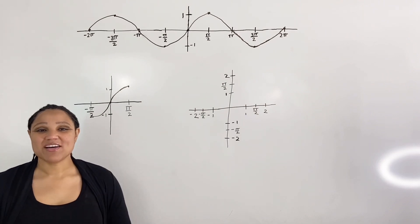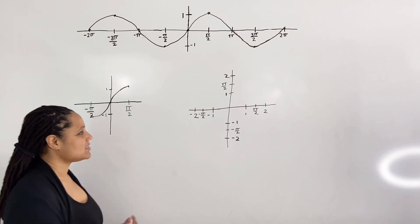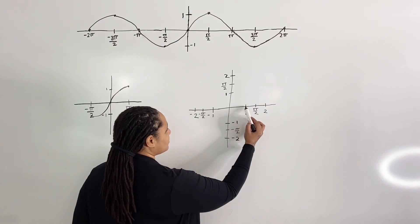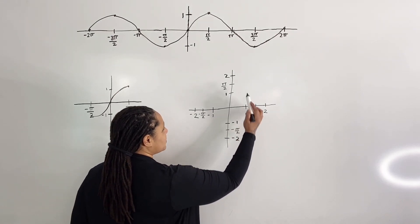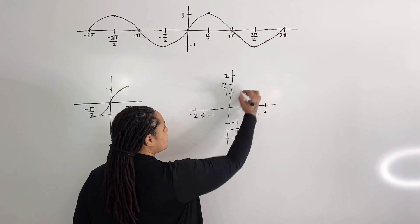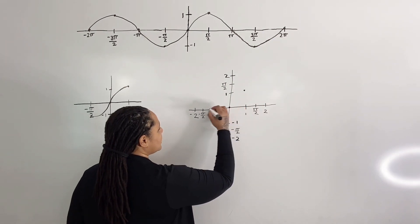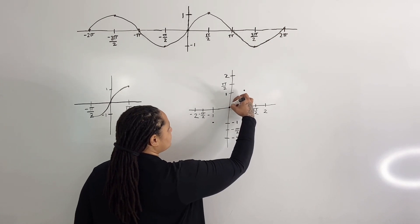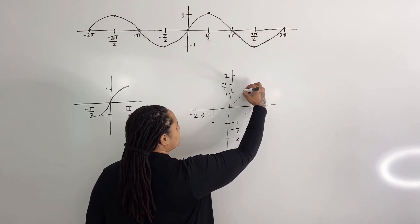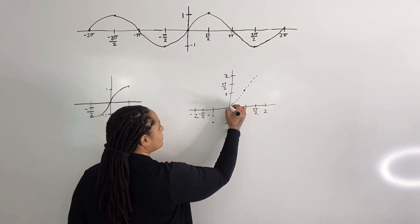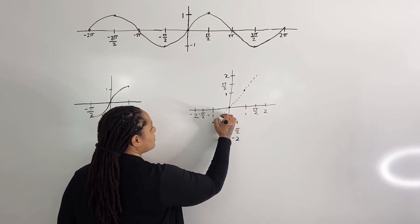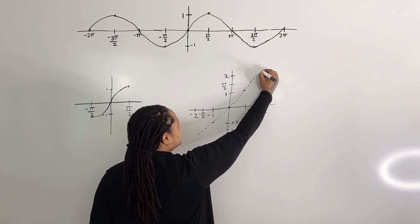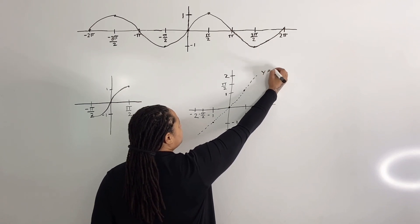Step two: draw the line y equals x. The line y equals x passes through the points where the input and output values are equal — (1, 1), (0, 0), and (negative 1, negative 1). We run a dotted line through those points. This is the line y equals x.